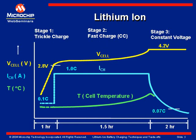In stage one, the trickle charge is employed to restore charge to deeply depleted cells. When the cell voltage is below approximately 2.8 volts, the cell is charged with a constant current of 0.1 C maximum. After the cell voltage has reached 2.8 volts, the second stage — the fast charge or bulk stage — is entered.